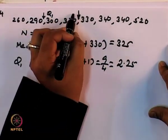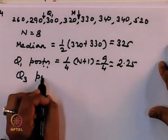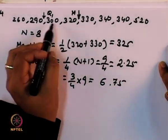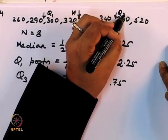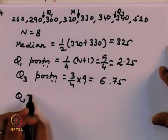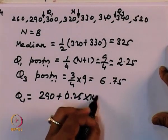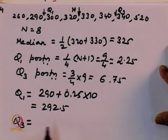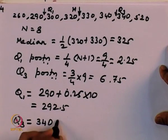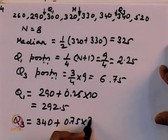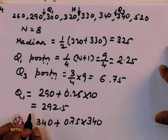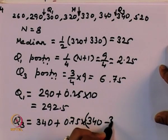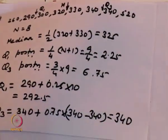The Q3 position is (3/4) times 9 equal to 6.75. So Q1 is at position 2.25: 290 plus 0.25 times 10 equals 292.5. Q3 is at position 6.75: the 6th and 7th values are both 340, so Q3 equals 340. We have Q1 equal to 292.5 and Q3 equal to 340.